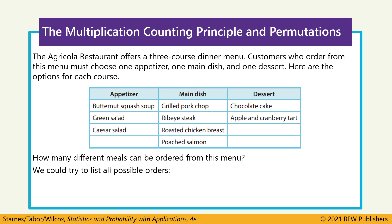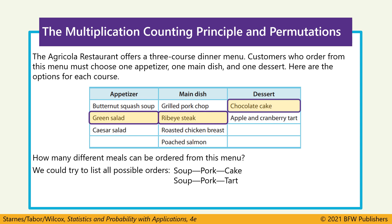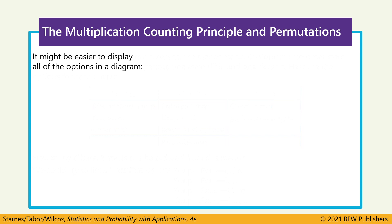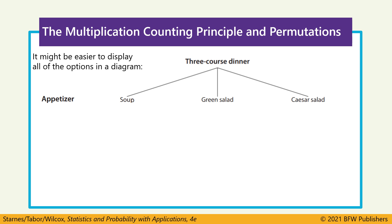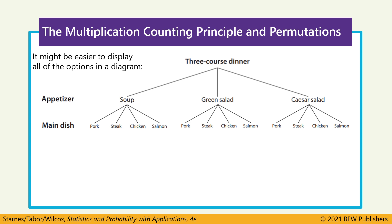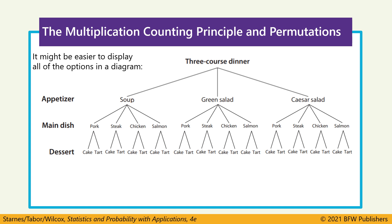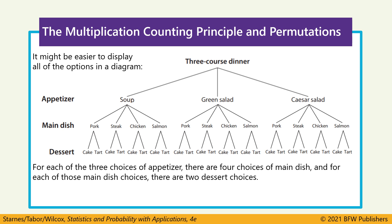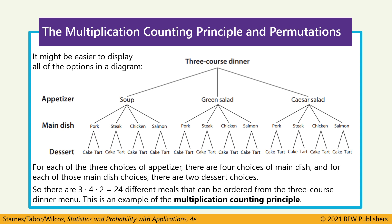We could try to list out all the possible orders, but as you can see, this is going to take quite a bit of time. So instead, it might be easier to make a tree diagram. We'll start off by choosing our appetizer. Each appetizer is paired with four options for a main dish, and then each main dish is paired with two options for dessert. This simplifies to just multiplying all of these different options.